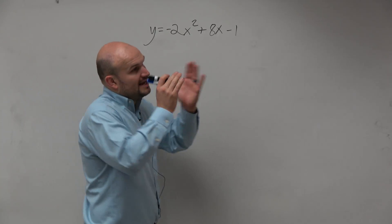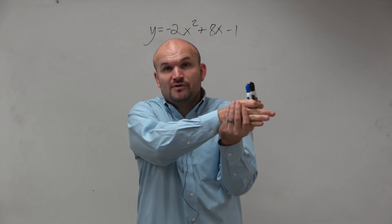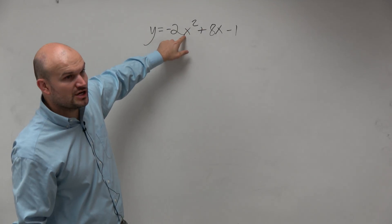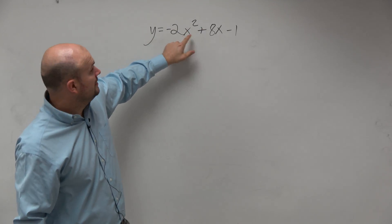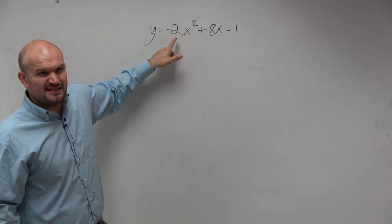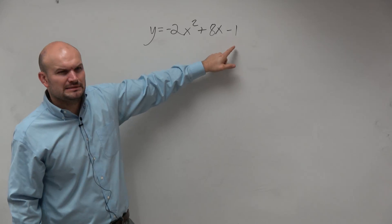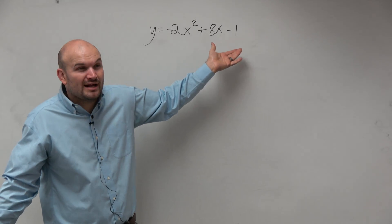In this example, again, we're relating these to your perfect square trinomials. Is x squared a square term? Is negative 2 a square term? Can you take the square root of negative 2? No. What about negative 1? Is that a square term? No. So I know this is not a perfect square trinomial already.